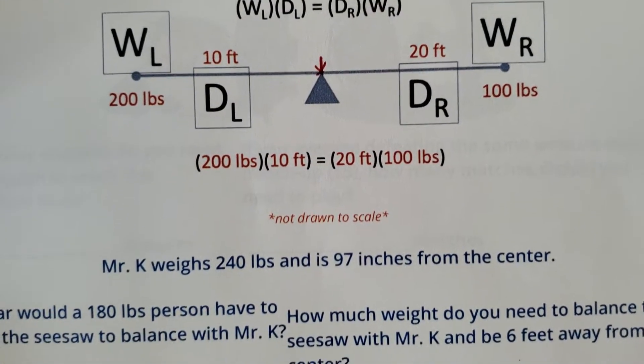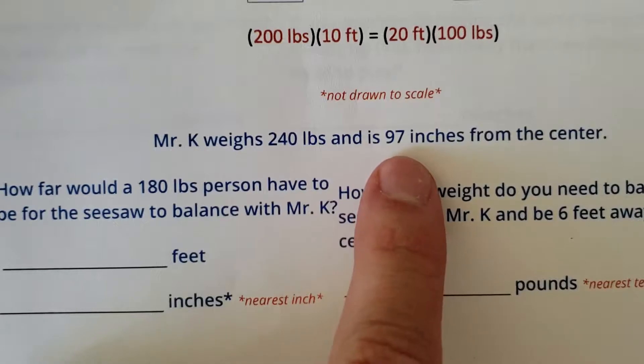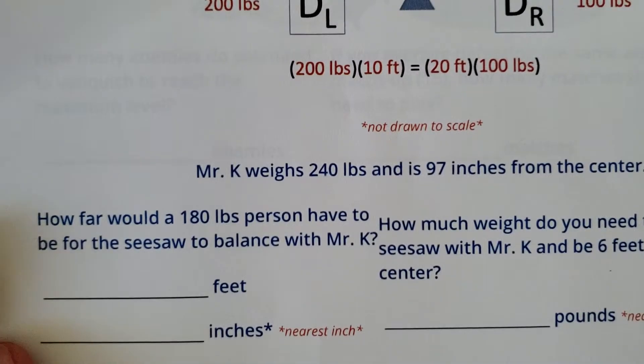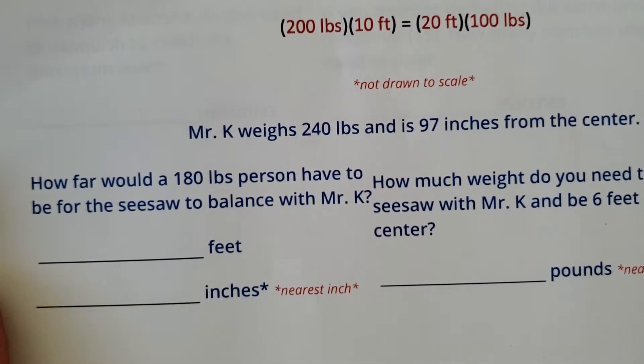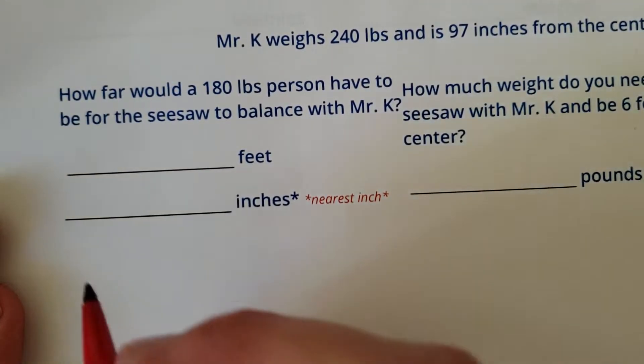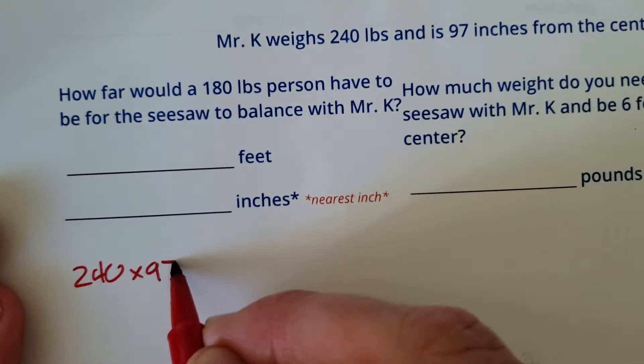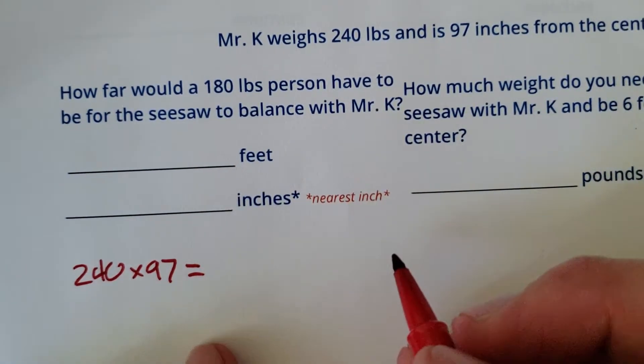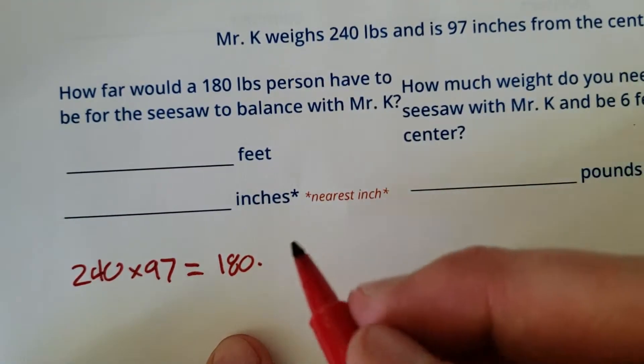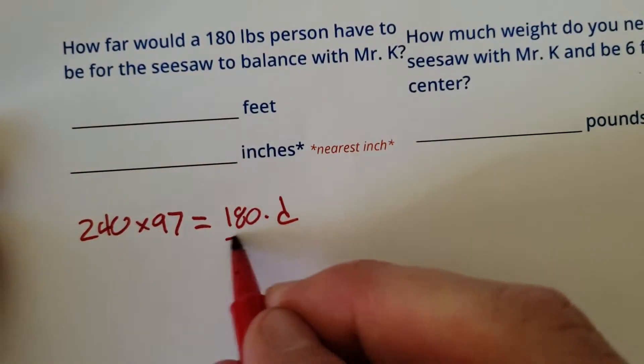So we have a math problem, students. Mr. K weighs 240 pounds and is 97 inches from the center. So you can put me on the left, I don't care. How far would a 180-pound person have to be for the seesaw to balance with Mr. K? So take my weight, 240 times my distance. That has to equal the other person's weight, which is 180 times their distance. There we go. It's actually kind of easy. So I'm going to divide both sides by 180.